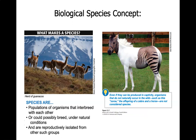Species are groups of organisms that can interbreed with one another, or could possibly interbreed with one another if they were not in some way separated or isolated. Because sometimes populations could breed — they just don't encounter each other. So if they could breed were they able to encounter each other, they are considered a species. And they also have to be isolated from other groups.